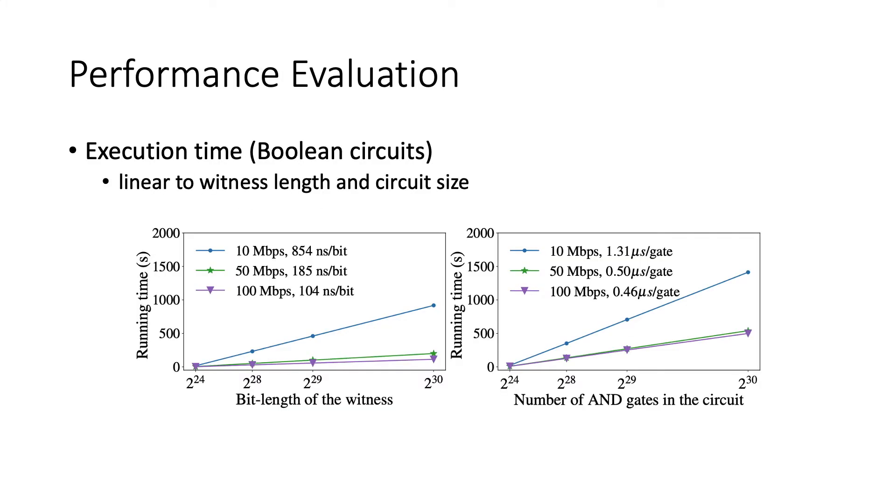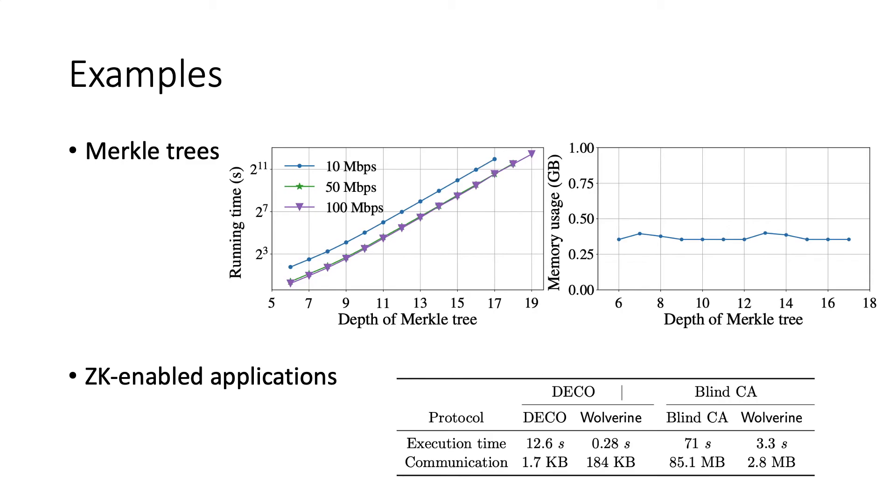Regarding the performance evaluation, we implement the zero-knowledge proof protocol for both Boolean and arithmetic circuits. For Boolean circuits, the execution time is linear to the bit length of the witness and the number of AND gates in the circuit. And the performance is good even in the low network setting. And for Boolean circuits, an interesting application is to prove the knowledge of a path in the Merkle tree. The running time is proportional to the number of nodes in the Merkle tree. And the memory usage is very small because it is only linear to the memory that is used when the circuit is evaluated non-cryptographically.